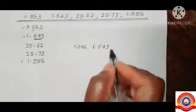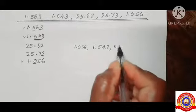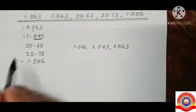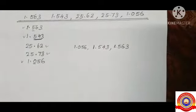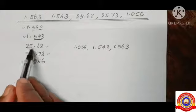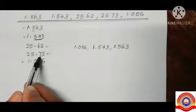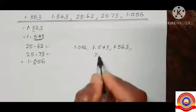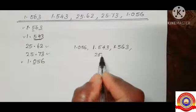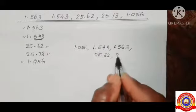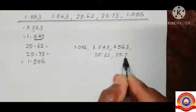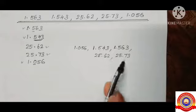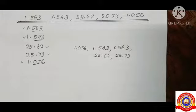Next we have to find the smallest of 25.62 and 25.73. In the decimal part, the tenths place is 6 and 7, so 25.62 is the next smallest number and the last number is 25.73. So the numbers in ascending order are: 1.056, 1.543, 1.563, 25.62, and 25.73.